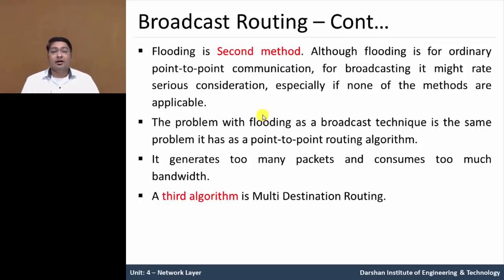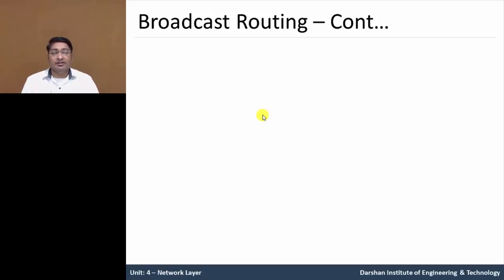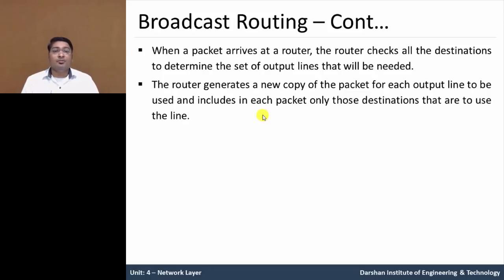The third method is the algorithm of multi-destination routing. In this method, each packet contains either a list of destinations or a bitmap indicating the desired destinations. This saves bandwidth. When a packet arrives at a router, the router checks all destinations and determines the set of output lines which are needed.